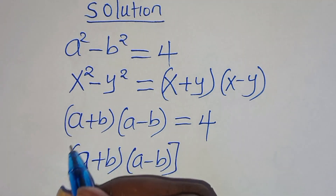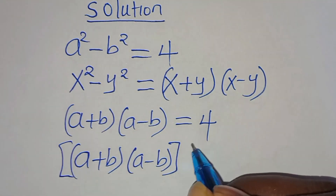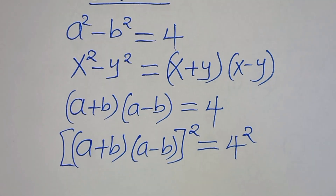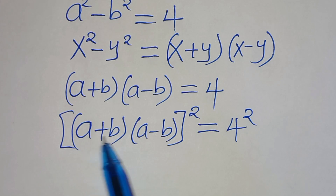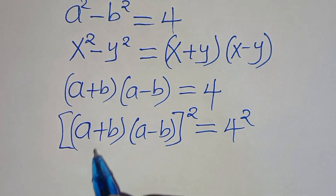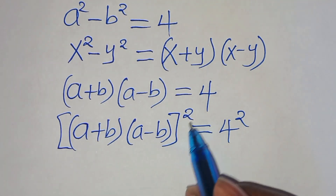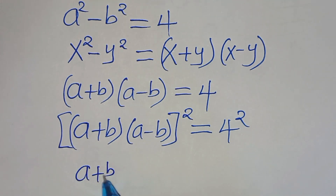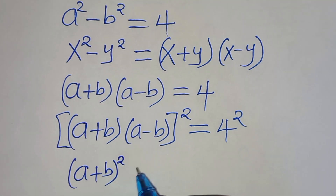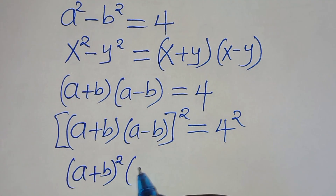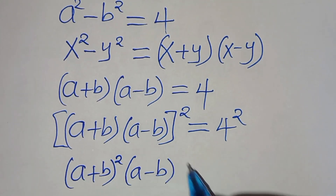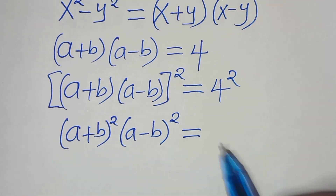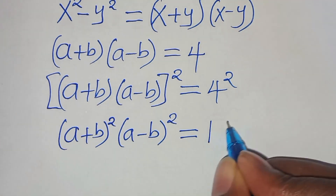The next step is to square both sides. So we have a plus b times a minus b, all squared, equal to 4 squared. This can be expressed as a plus b raised to the power of 2, multiplied by a minus b raised to the power of 2, and this equals 4 squared, which is 16.